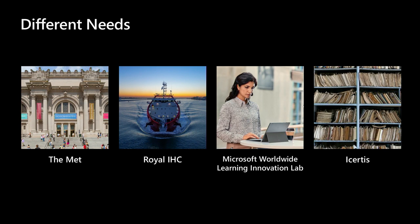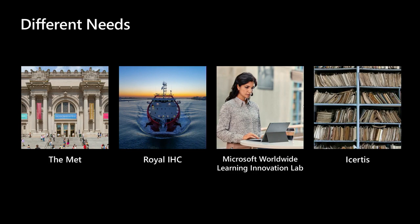These all sound like very different use cases, and they are — very different customers with very different needs. But there is one pattern they all have in common: they need to ingest data, apply machine learning capabilities to it, and enrich this information. Then they want people to get insights and explore this information — cognitive skills as a way to enrich, and search as an instance of exploration. The ingest, enrich, explore pattern is a constant across all of these very different customers all over the world.